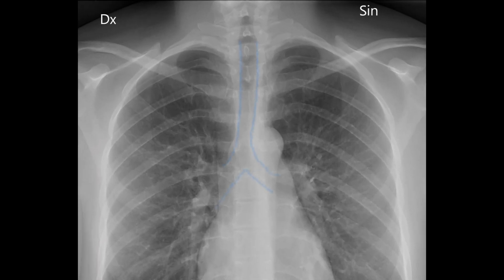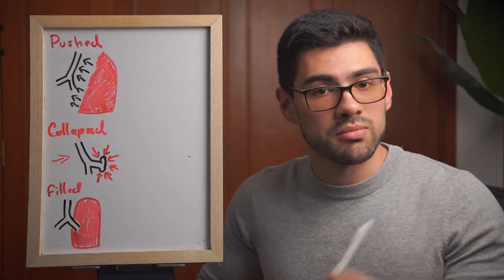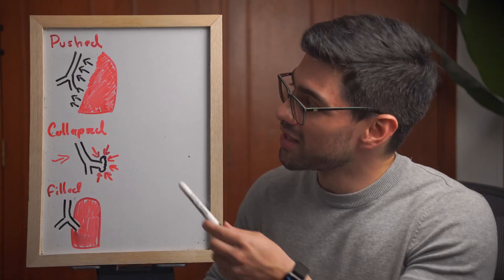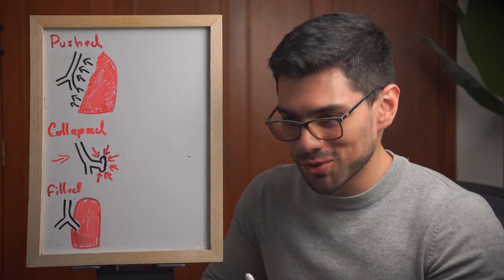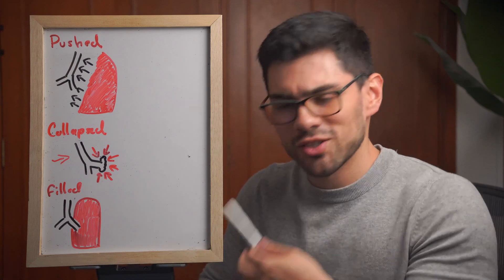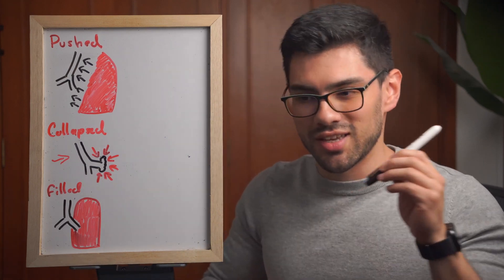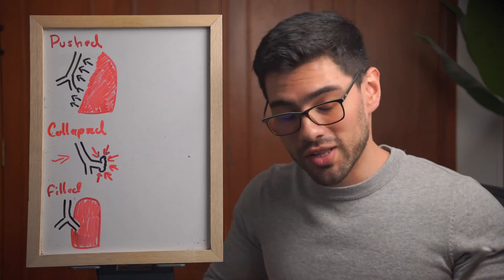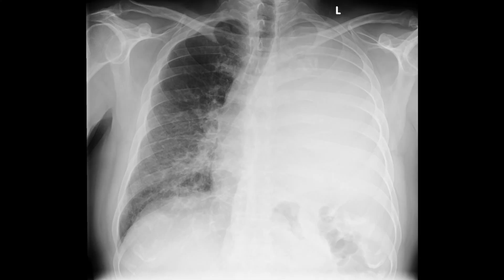The structure that will help us the most is the tracheobronchial tree. When the alveoli are being pushed, that pushing is also going to deviate the tracheobronchial tree, because the structure from which the alveoli originate will be pushed as well. So we would see a white lung and the tracheobronchial tree deviated towards the opposite side.